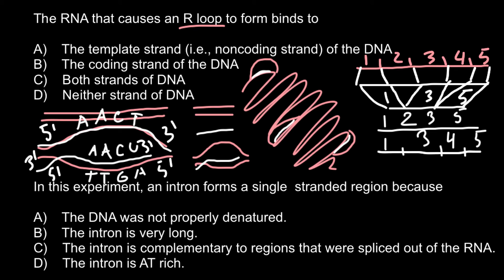Now we are ready to answer our question. The RNA that causes an R-loop to form binds to — RNA binds to the template strand of the DNA. We also call this the non-coding strand of the DNA. The answer is A.